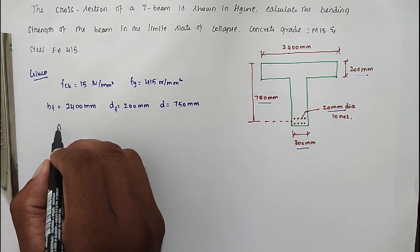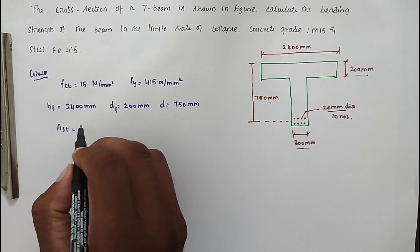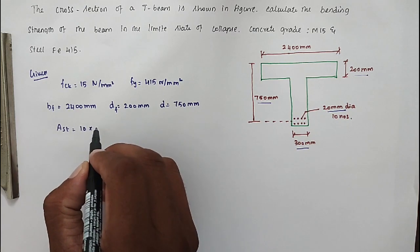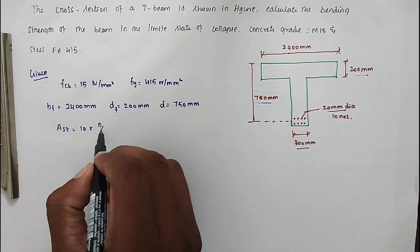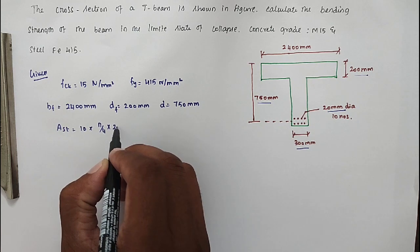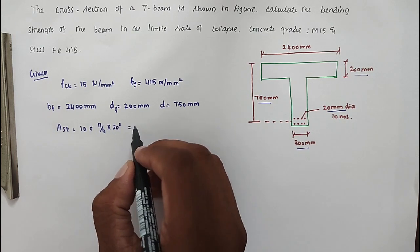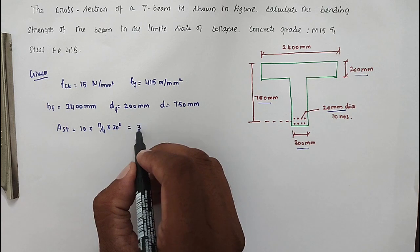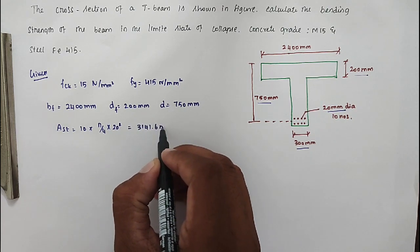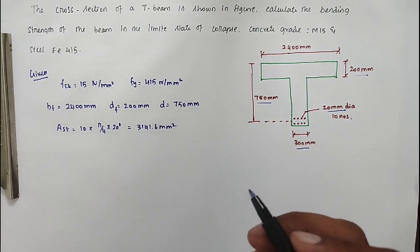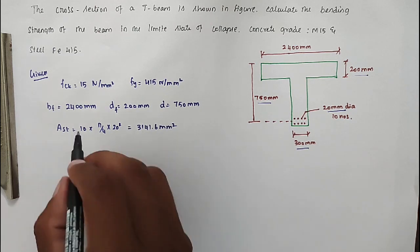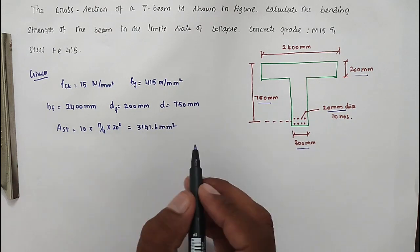So we have to find out the AST value. AST equal to 10 numbers of 20mm diameter bars: pi by 4 into 20 square. Solving this, we got the value of 3141.6 mm square.